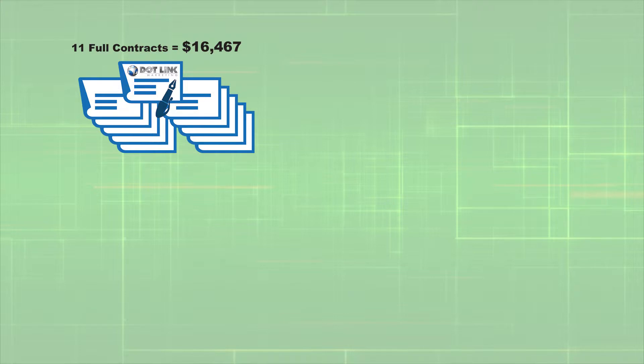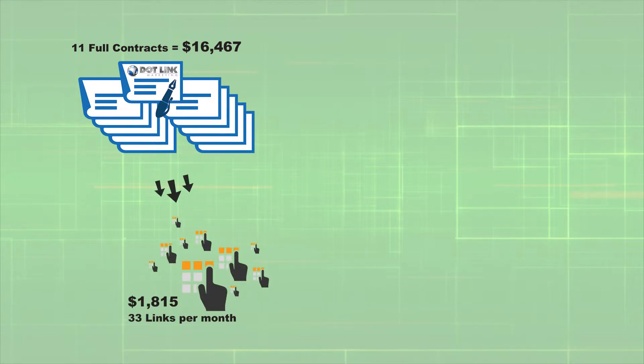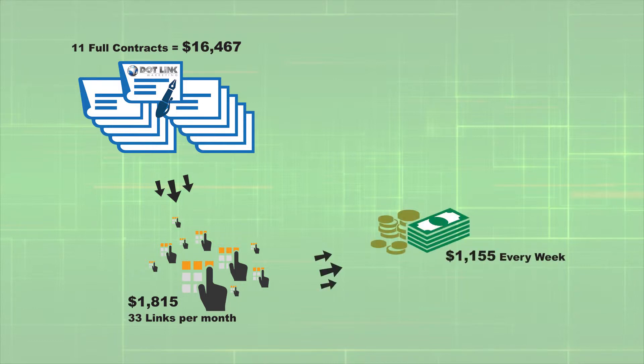Under your account you can have up to 11 total contracts. If you choose to begin with 11 contracts, your total investment will be $16,467. You are obligated to maintain a purchase of 33 daily link chains for a total monthly cost of $1,815. Click and complete the link chains every day for seven consecutive days and you will receive $1,155 per week.